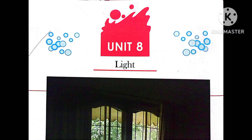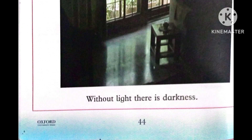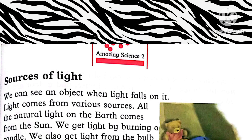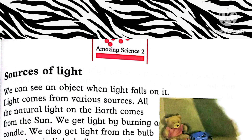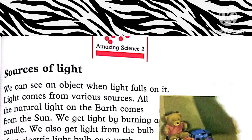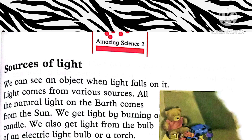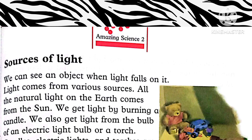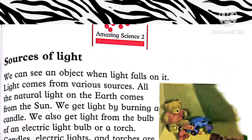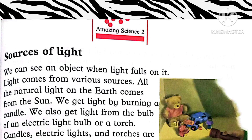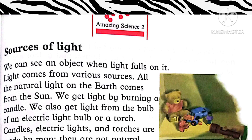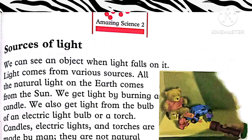It is Unit Number 8 and the name of this unit is Light. Without light, there is darkness. The first topic is Sources of Light. We can see an object — we can see something — when light falls on it. Light comes from various sources.